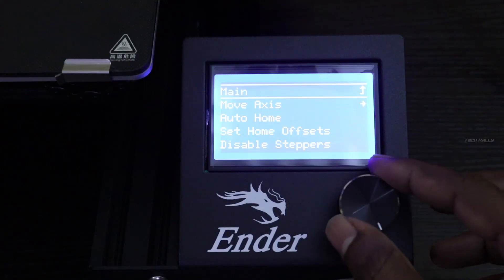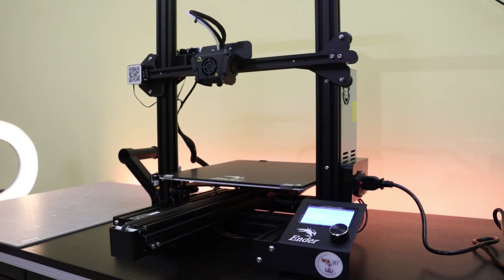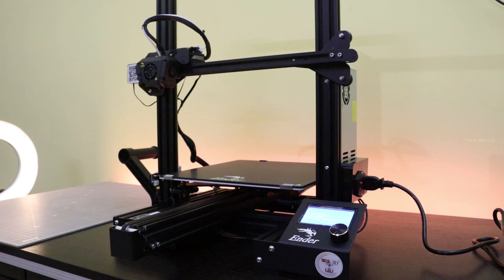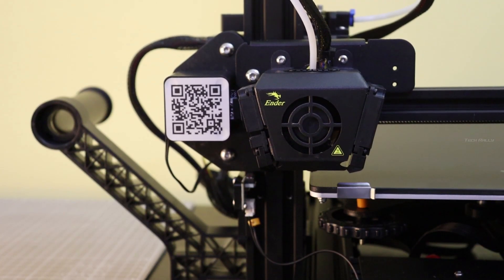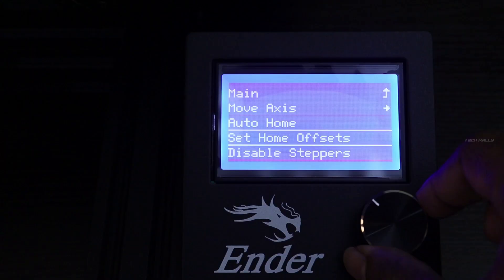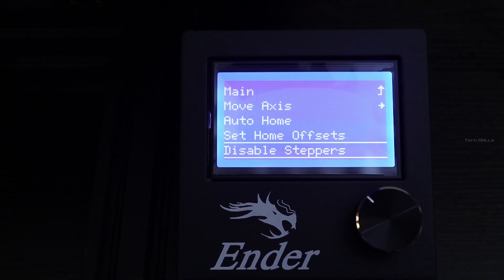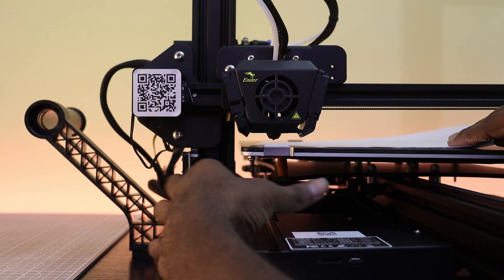Now I am going to level the bed, which is the hardest part in any 3D printer to start with. First go to the menu and select auto home. And once it is in the home position, then select the option disable stepper, which will allow you to move the build plate and print head.